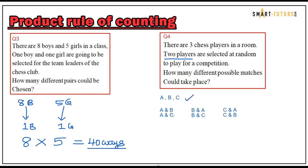Assume the three chess players are A, B, and C. A can play with B, A can play with C. Then if B is selected first: B plays with A, B plays with C. If C is selected first: C plays with A, C plays with B. Altogether the total number of arrangements is six ways.